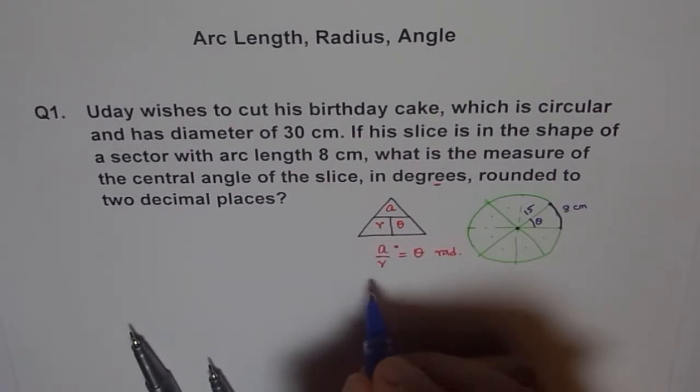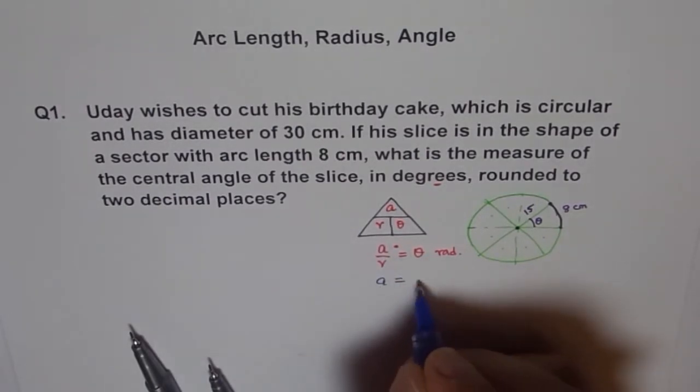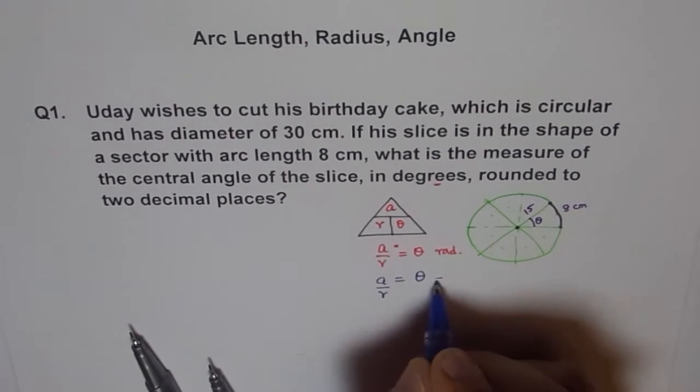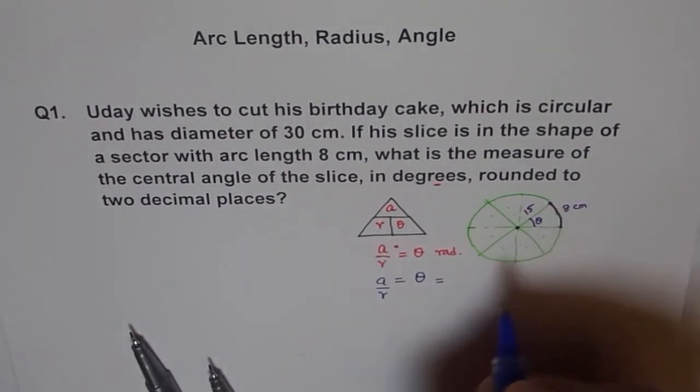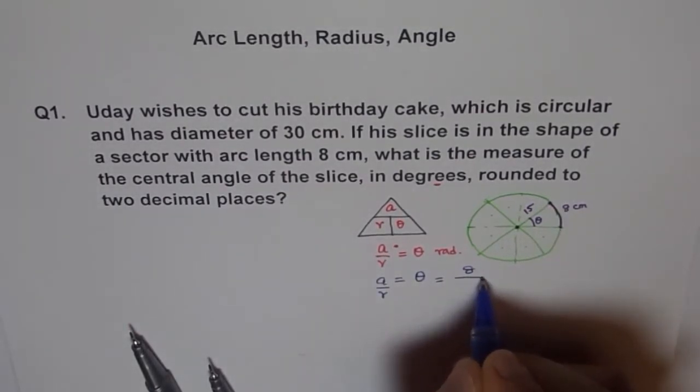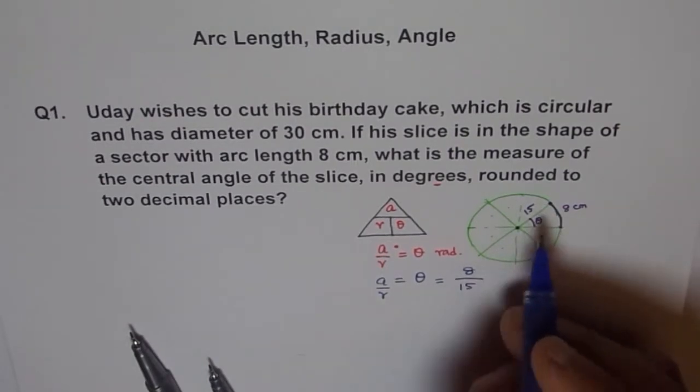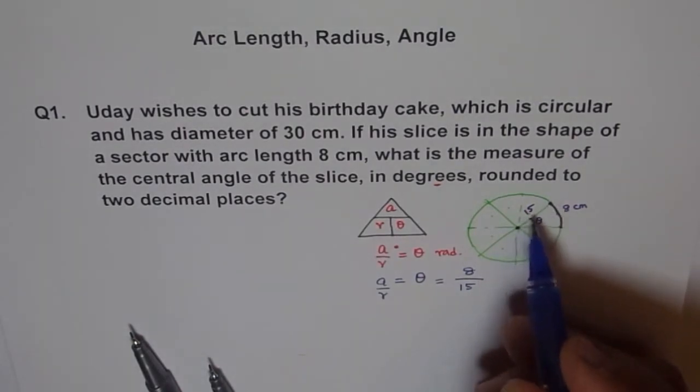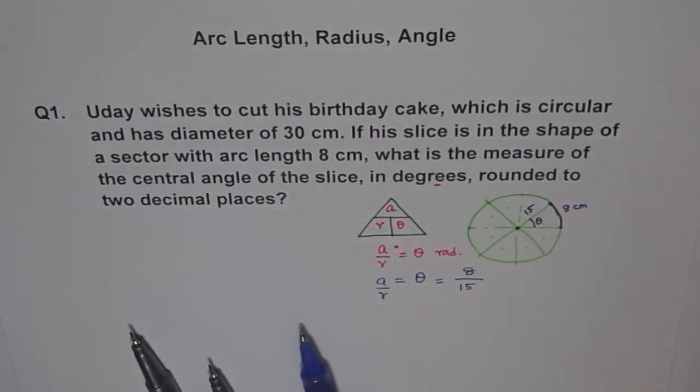So let's find this theta first. So we say theta equals to, again I wrote A. Theta equals to A divided by R. Let me write again like this. Theta equals to A is how much? 8. So 8 divided by R, which is 15. How did we get 15? Half of 30. Diameter is 30. Therefore, radius is 15. So let's find this 8 divided by 15. Or we will do this calculation later. Don't worry.